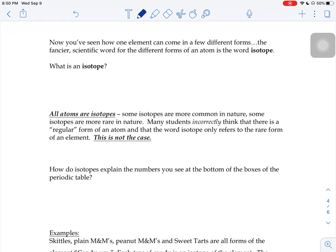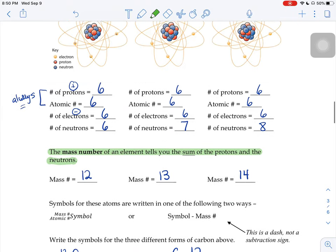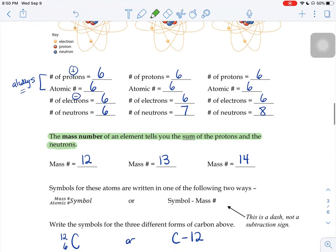We've just seen on the previous page how one element can come in a few different forms. The fancier scientific word for one of those forms of an atom is the word isotope. So we have three different isotopes of carbon. One that has a mass number of 12, one that has a mass of 13, and one that has a mass of 14. They're all atoms of carbon because they have six protons, and that's what makes carbon. Carbon is the six protons.